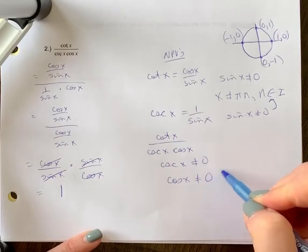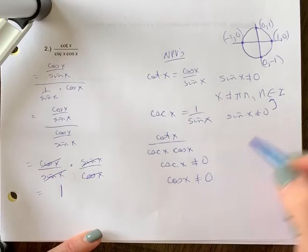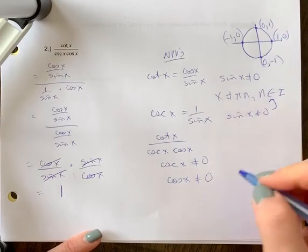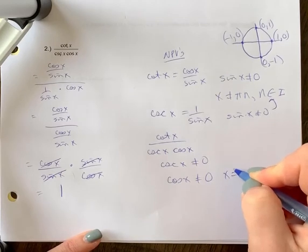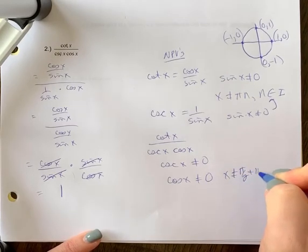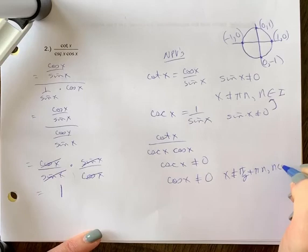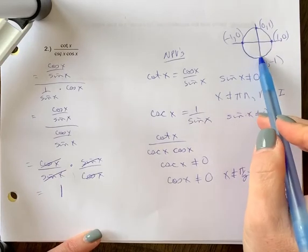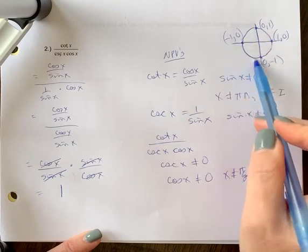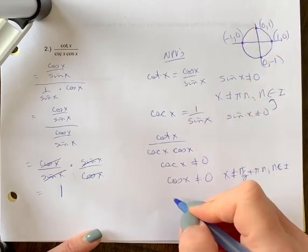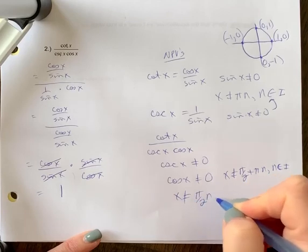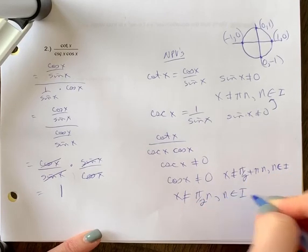And so when we look and consider that, cos x cannot equal 0 is going to occur at pi by 2, 3 pi by 2, etc. So we have that scenario. So putting this all together, it ends up being on those four every 90 degrees or every pi by 2. So that would mean x cannot equal pi by 2 n, where n is the element of integers.